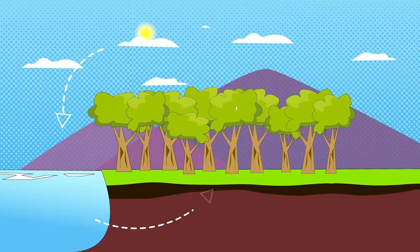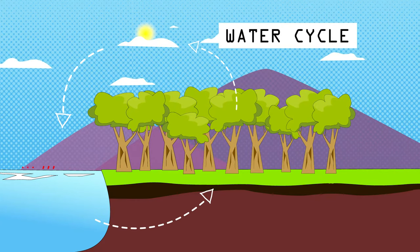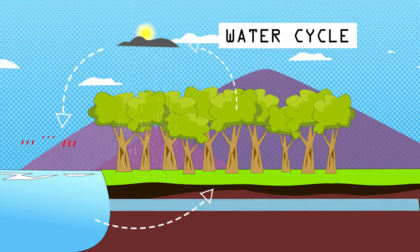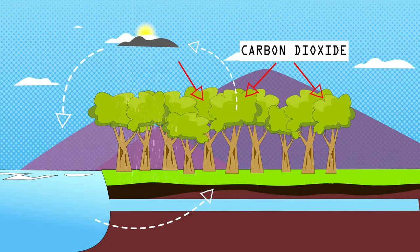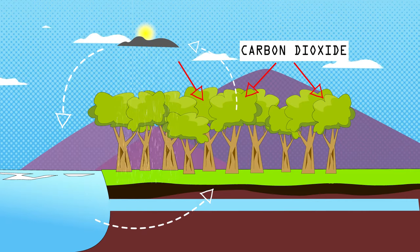Forests provide services to the planet. They are important in the water cycle, recycling fresh water across the globe. Trees are also able to take in and store carbon dioxide, which helps regulate the earth's temperature.